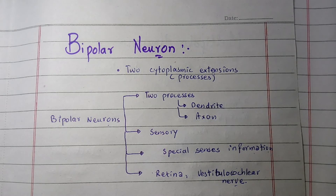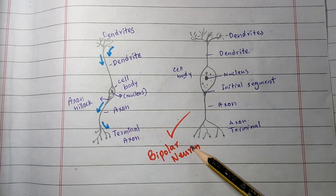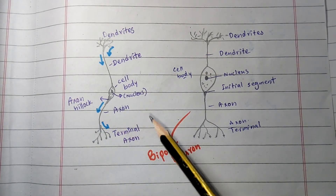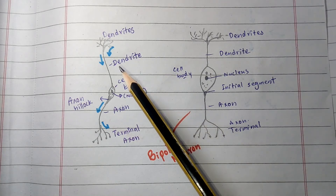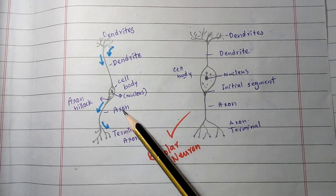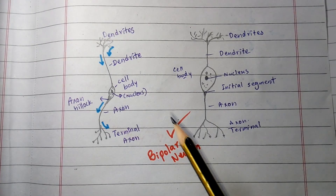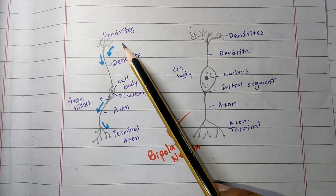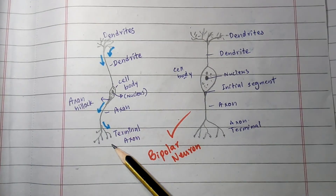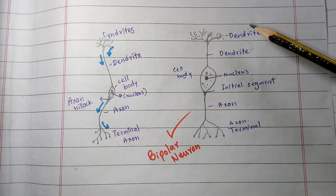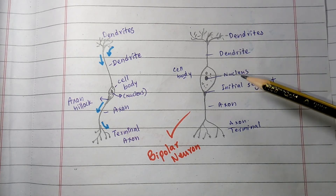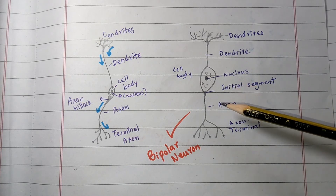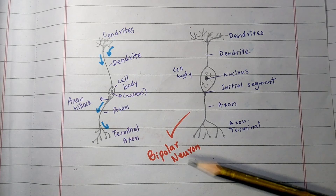Here is the diagram of the bipolar neuron. You can see the axon hillock, axon, and dendrite present in the bipolar neuron, while in the unipolar neuron there was no dendrite. The cell body, axon, and dendrite are the structural components of the bipolar neuron. The axon terminal and arrows show the signals or impulses traveling from the dendrites and receptor cell to the CNS. The dendrites show branching, the cell body contains the nucleus, and the initial segment is where the axon originates, followed by the axon terminal.